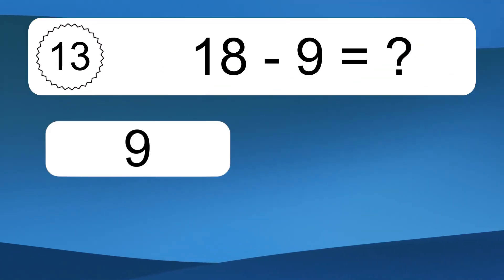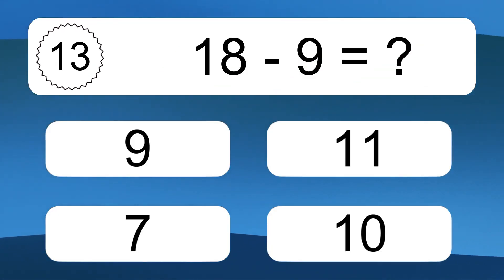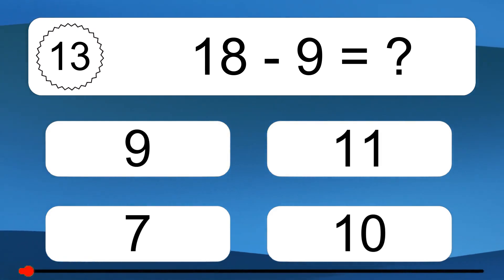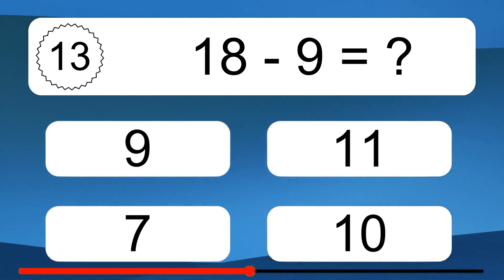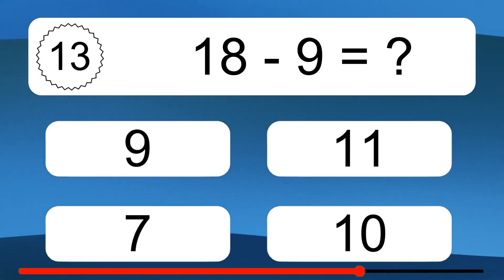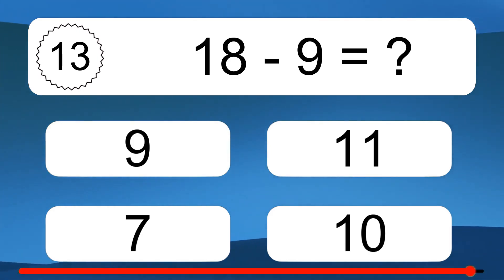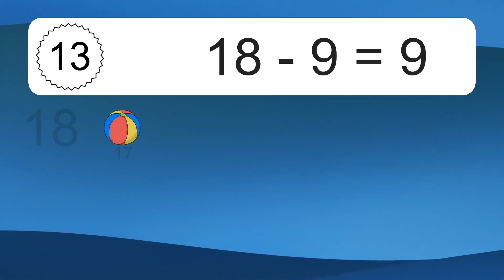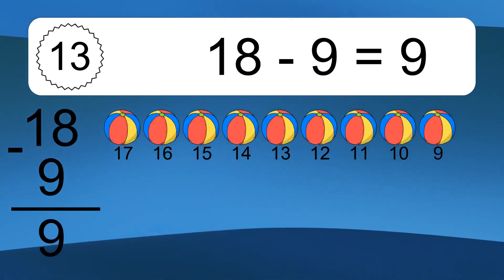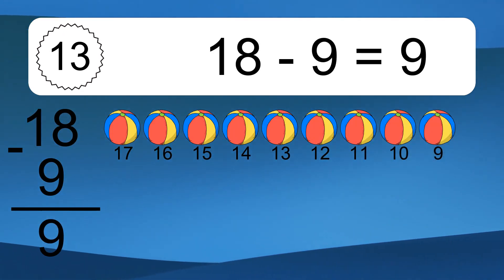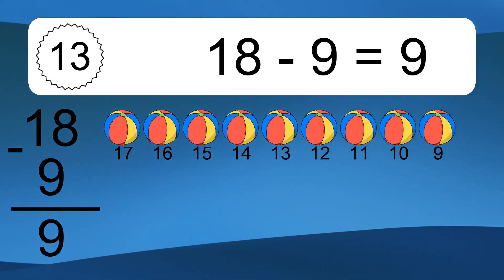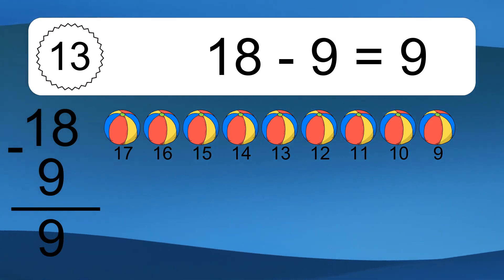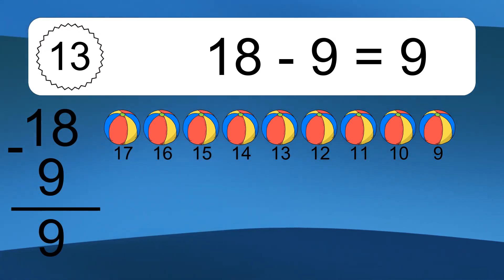18 minus 9 equals what? 18 minus 9 equals 9. Let's count it: 17, 16, 15, 14, 13, 12, 11, 10, 9.